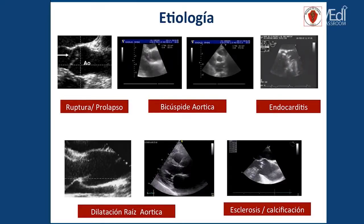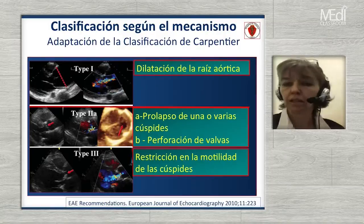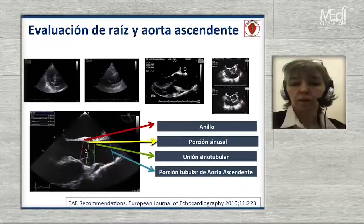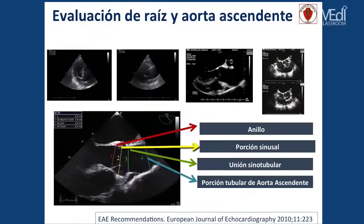La asociación europea de ecocardiografía propone una clasificación de la insuficiencia aórtica parecida a la insuficiencia mitral: el Tipo 1 es funcional por dilatación de la raíz aórtica; el Tipo 2 por prolapso, hipermotilidad o perforación de las valvas; y el Tipo 3 por restricción de la movilidad. Luego de evaluar la válvula, tenemos que evaluar la raíz y la aorta ascendente. Hay cuatro lugares donde tenemos que medir los diámetros: a nivel del anillo, la porción sinusal, la porción sinotubular y la aorta ascendente tubular.